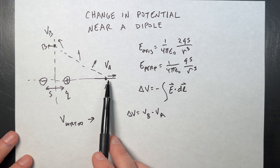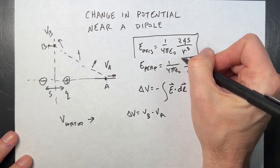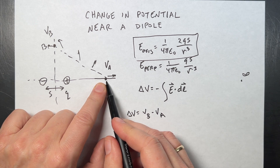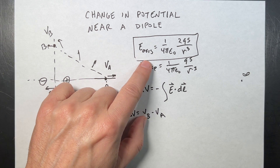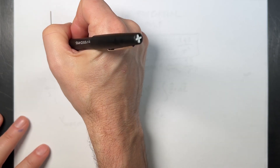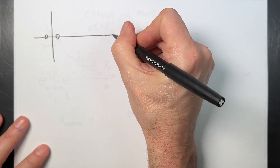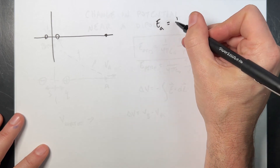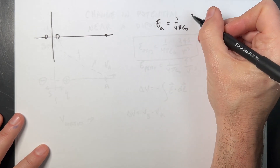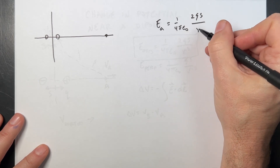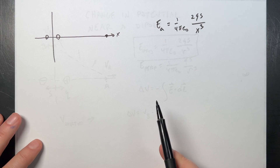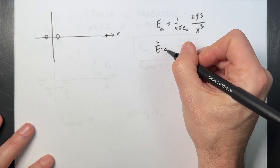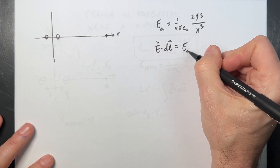Let's find VA first by integrating from infinity to point A. Here's my dipole, here's my point, and here's the field E_axis — 1 over 4πε₀ times 2Qs over x³ in the x-direction. So the dot product E·dL is just E_axis dx. Note: the direction of the path integral comes from the limits of integration, not from a sign on dL.